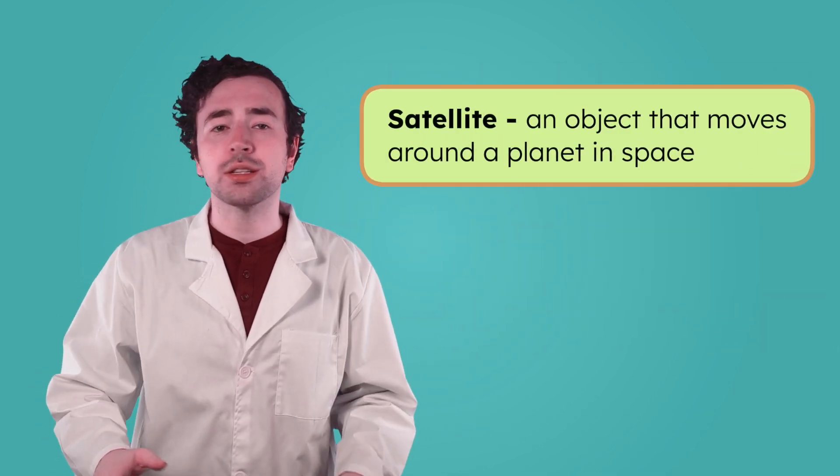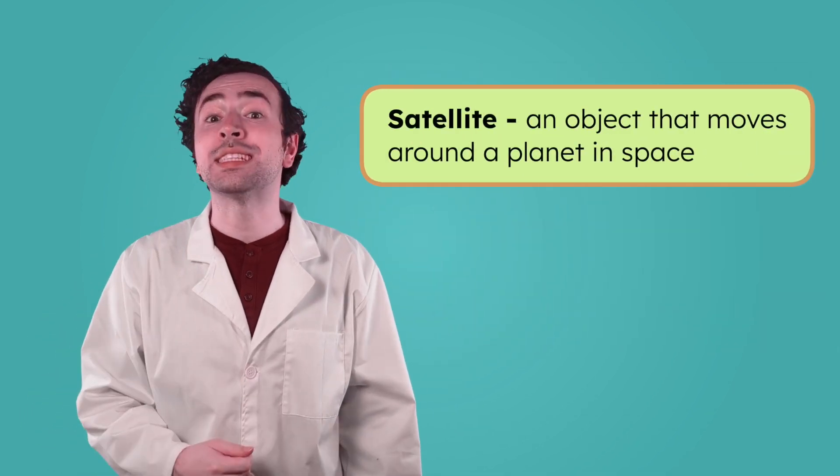It's pretty easy to spot the moon. It's one of the biggest, brightest things in the night sky. But the moon isn't just sitting still up there, it's constantly orbiting Earth. That makes the moon something called a satellite. A satellite is any object that moves around a planet in space.